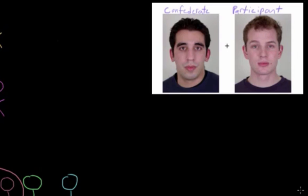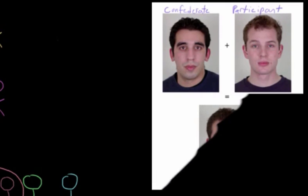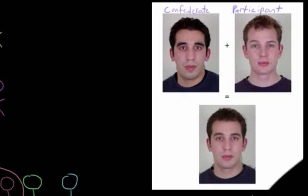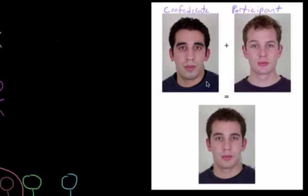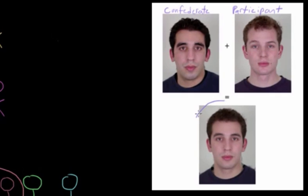In the second condition, participants also saw a picture of the other player, but unbeknownst to them, that picture had some of their own facial features mapped onto it. And the results of this study show that the individual was much more likely to cooperate with the other player and to deem them as trustworthy when the picture of the other player had some of their own facial features morphed into it.